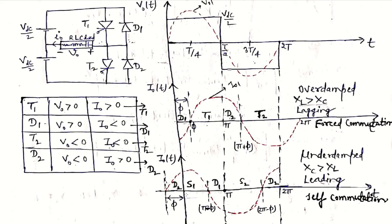Now we will see the conduction of the devices using the switching logic table. We mark the switching device conductions according to this switching table. As thyristor T1 is on when V₀ > 0 and I₀ > 0, but in the voltage and current waveform from 0 to T/4 the voltage is positive (Vdc/2) and current is negative. So diode D1 is conducting according to the switching logic table, and we similarly write the switching conduction by observing the voltage and current waveform signs.